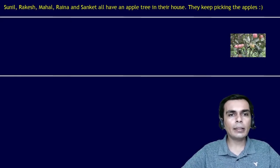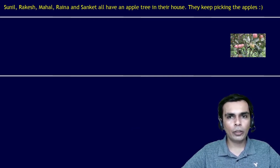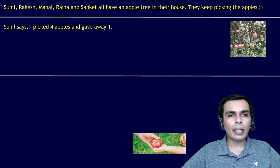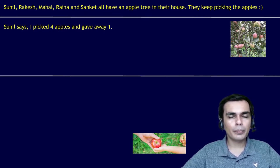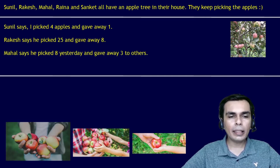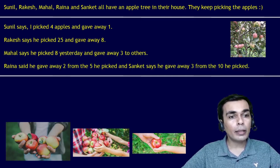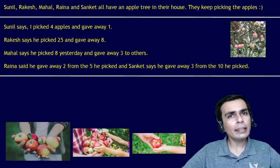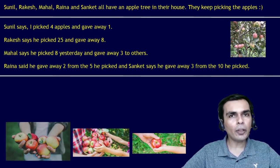Sunil, Rakesh, Mahal, Raina and Sanket all have an apple tree in their house and they keep picking apples. Sunil says he picked 4 apples and gave away 1 to the needy. Rakesh says he picked 25 and gave away 8. Mahal says he picked 8 yesterday and gave away 3 to the others. Raina gave away 2 from the 5 he picked, and Sanket says he gave away 3 from the 10 he picked.